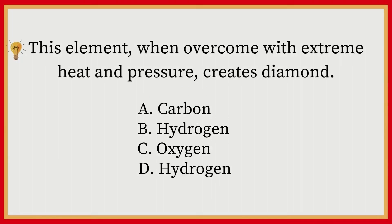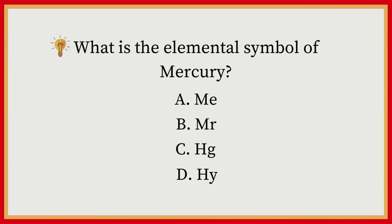This element, when subjected to extreme heat and pressure, creates diamond. A) Carbon, B) Hydrogen, C) Oxygen, D) Hydrogen. Answer: A, Carbon. What is the elemental symbol of mercury? A) ME, B) MR, C) HG, D) HY. Answer: C, HG.